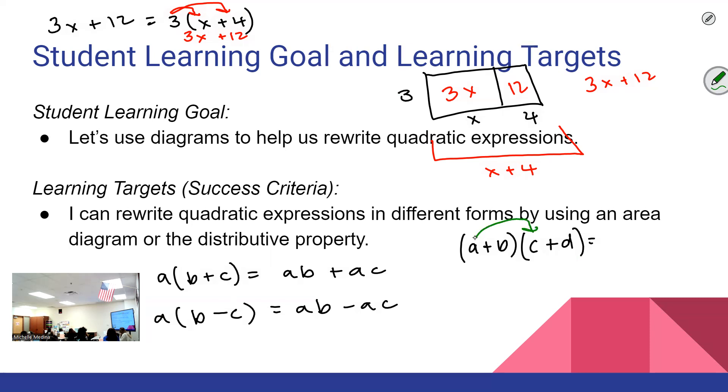But it is the same as foiling if you like that method. Where you take the first term, multiply it by both of the terms in the other parentheses, and then take the second term, multiply it by both terms in the other parentheses. And then what you get, you have to do a times c, which is ac, or if there are numbers, multiply the numbers. A times d, which is ad, and then distribute the b now. b times c is what class? bc, good, don't overthink it. b times d is bd.